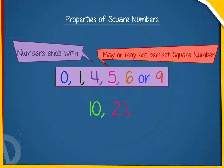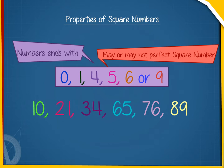For example, 10, 21, 34, 65, 76 and 89 are not perfect squares.